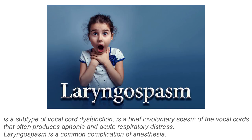Laryngospasm is a subtype of vocal cord dysfunction. It is a brief involuntary spasm of the vocal cords that often produces aphonia and acute respiratory distress. Laryngospasm is a common complication of anesthesia when endotracheal tubes are placed down the throat.